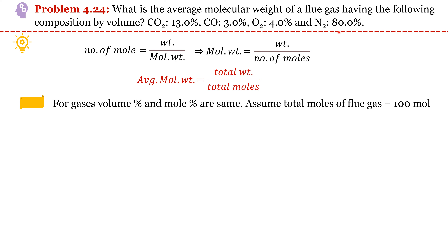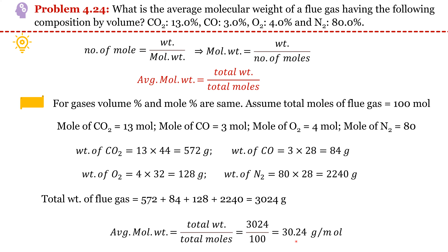Weight of CO equals moles of CO times its molecular weight. Weight of O₂ comes out as 128 g and weight of N₂ as 2240 g. Adding all individual component weights gives a total weight of 3024 g. With total moles assumed as 100, the average molecular weight comes out as 30.24 g/mol.